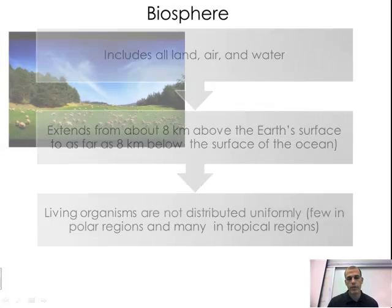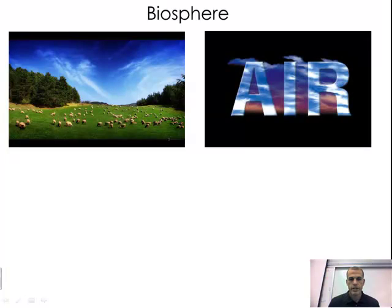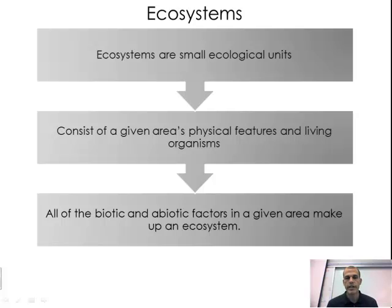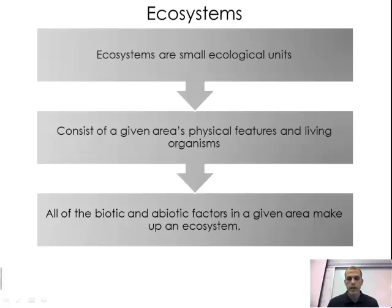Moving forward from here, we're going to take a quick look at what the ecosystem is. Here we have pictures looking at land, air, and water — maybe that will give you a better visual as you think about the stipulations on what a biosphere consists of. So the ecosystem: ecosystems are small biological units. If you look at them within the whole biosphere, these small units make up what the biosphere consists of. An ecosystem consists of a given area's physical features and living organisms — the non-living physical features and also the living organisms within it. All of the biotic and abiotic factors in a given area make up the ecosystem.